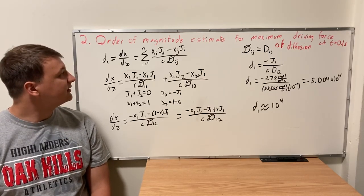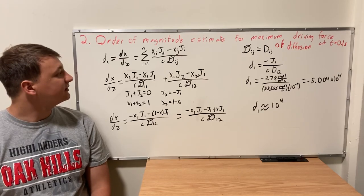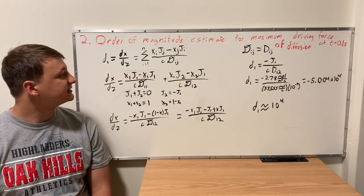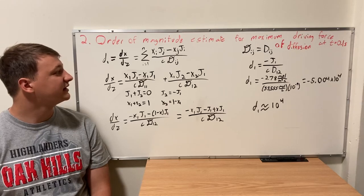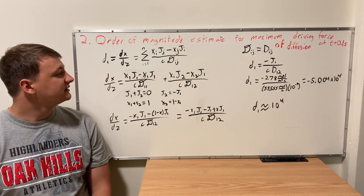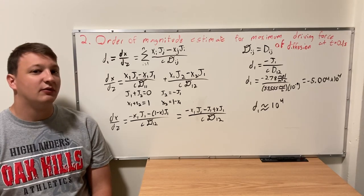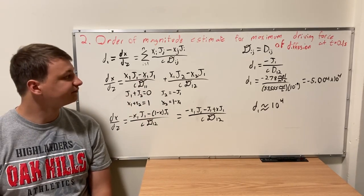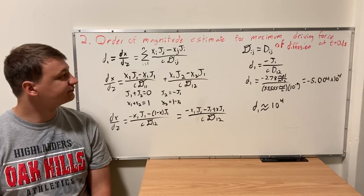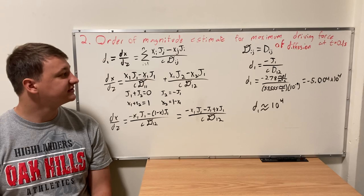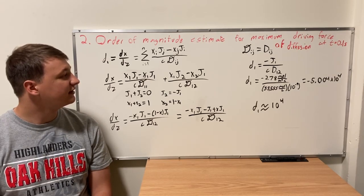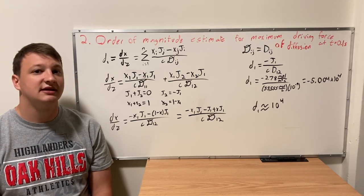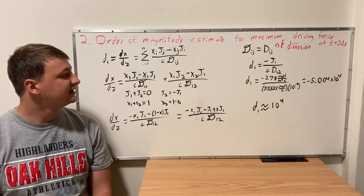We input our numbers. The term with M_1 × J_1 − M_1 × J_1 in the numerator equals zero, so that entire term is zero. We then add the term with M_1 × J_2 − M_2 × J_1 divided by the concentration times the Stefan-Maxwell diffusivity D_12.